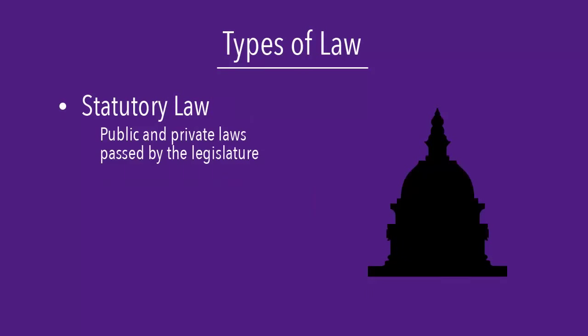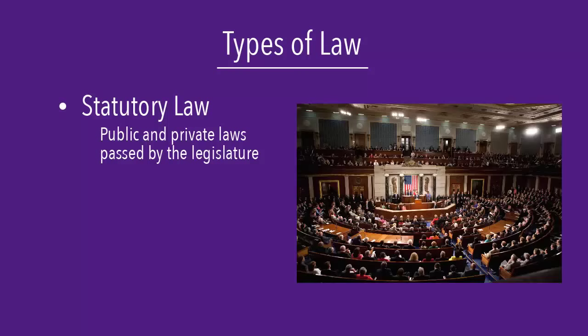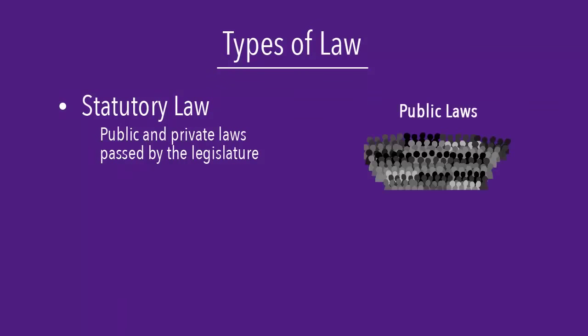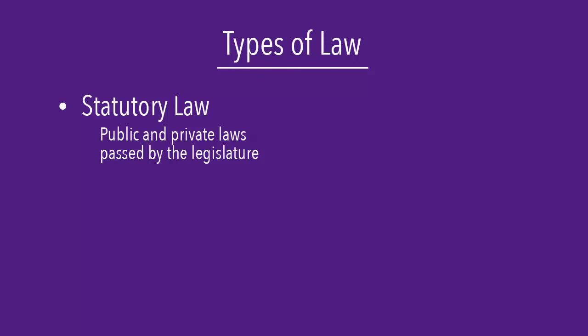Statutory law involves laws passed by the legislature. For the federal government, this would be the acts that are passed by the U.S. Congress. Statutory law involves both public and private laws. Public laws relate to the general public, and private laws relate to specific institutions or individuals. Most of the laws passed by Congress are public laws.